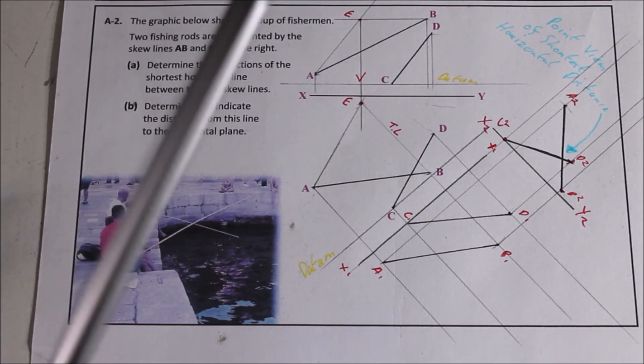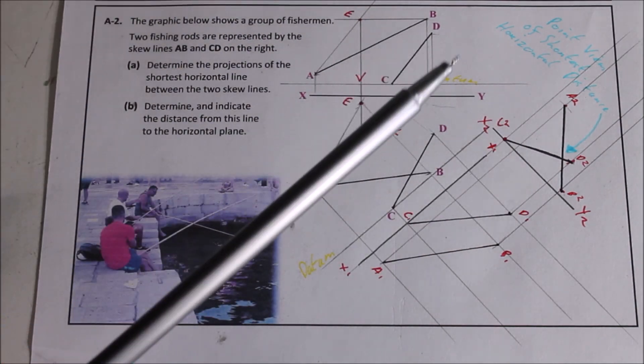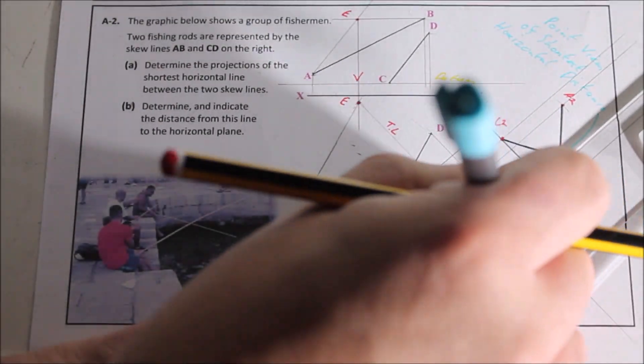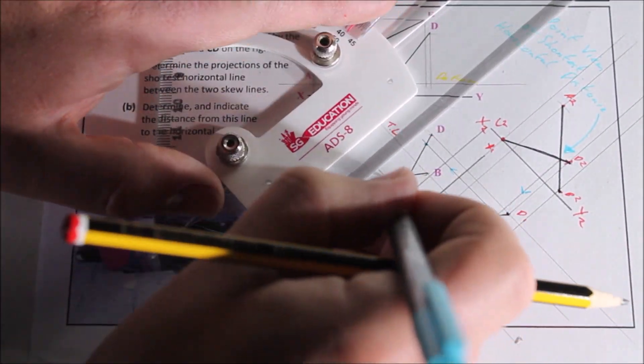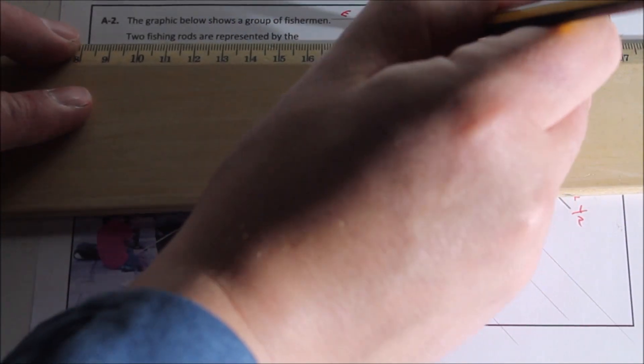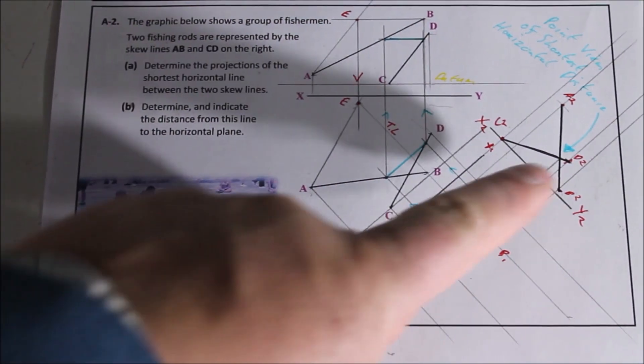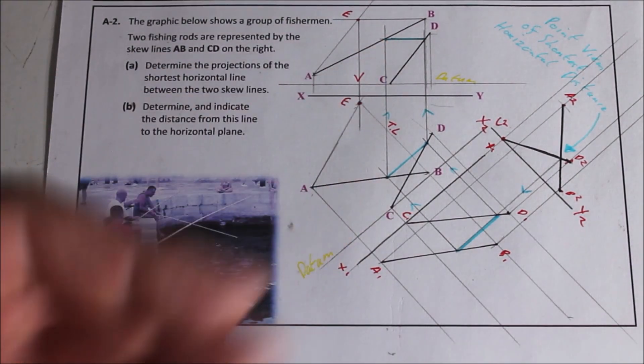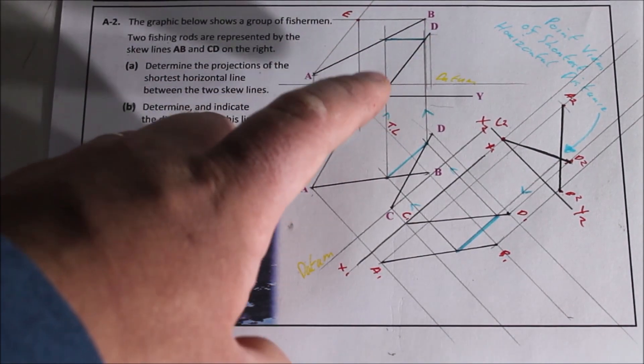What you need to remember is this is the shortest horizontal distance, so it actually should be a horizontal line in elevation now. When you're projecting back to the view, it might be slightly off, but use your T-square to try and get as close as you can at the horizontal.